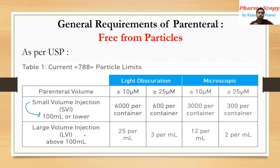For large volume injection (LVI), which has volume greater than 100 mL, using light obstruction: for particles ≥10 micrometers, the limit is 25 particles per mL; and for particles ≥25 micrometers, the limit is 3 per mL. Please remember these limits as they may be asked in GPAT 2021 or further competitive examinations.